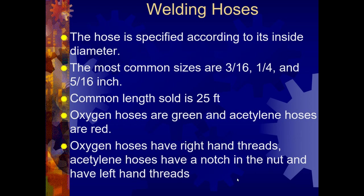Briefly about welding hoses: oxygen hoses are always green. Acetylene hoses are always red. It's actually impossible to switch those because of the direction of the threads. Oxygen hoses always have a right-hand thread. Acetylene hoses have a little tiny notch on the nut that communicates that they are a reverse or left-handed thread. There are actually different types and sizes of welding hoses. They run anywhere from 3/16ths, a real small hose, on up to a 5/16ths inch. They typically are sold in lengths of 25 feet, and all of this is dependent on the setup that you are putting them on.